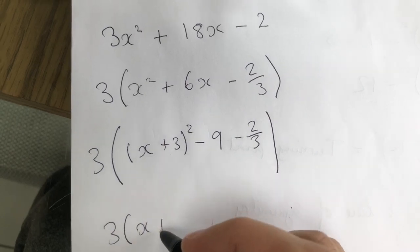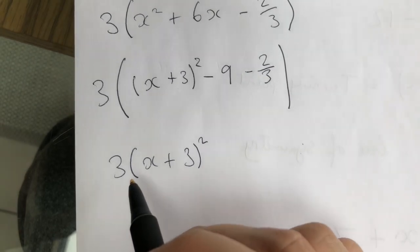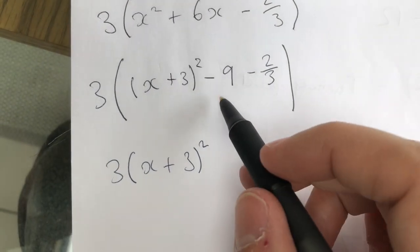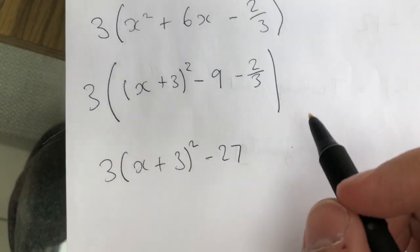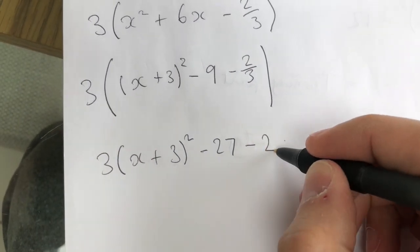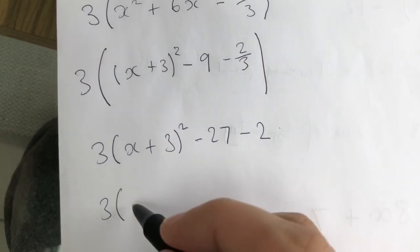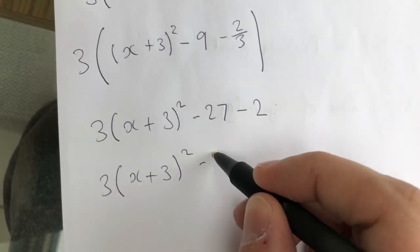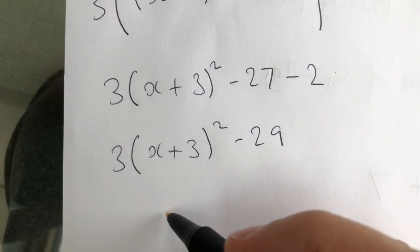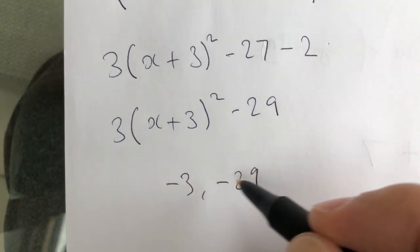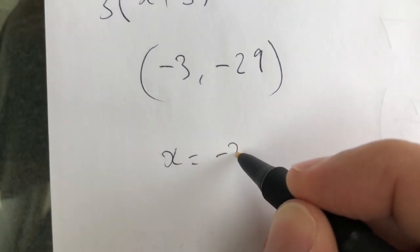So 3(x + 3)² — that's always going to be outside the bracket, we never times it into the bracket. Then 3 times minus 9 is minus 27, and 3 times minus 2 thirds takes it back to minus 2. Then we tidy up the outside: 3(x + 3)² minus 29. So the turning point would be minus 3, minus 29, and the line of symmetry would be x equals minus 3.